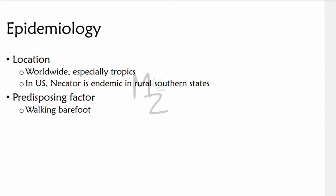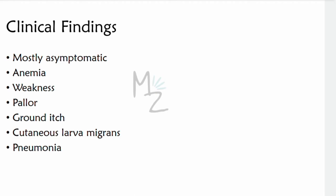Epidemiology: hookworm is found worldwide, especially in tropical areas. In the United States, Necator is endemic in rural southern states. Predisposing factors: walking barefoot on soil predisposes to infection. An important public health measure was requiring children to wear shoes to school.